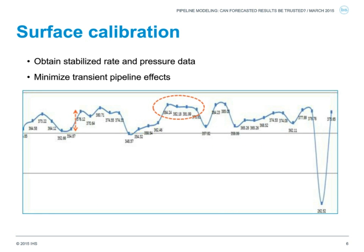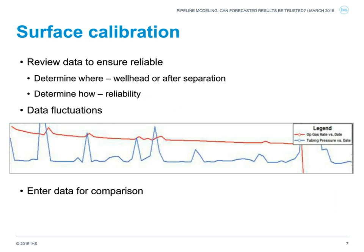Where should you always start from? You always need to understand the data you are going to use for calibration. It is very important to start with stabilized rates and pressure data. We want to minimize any transient pipeline effects within that data, because all our correlations are based on steady state conditions — meaning the rate coming in will match the rate coming out. Always try to find the most stable operating period possible. The graph here shows the gas rate through the main delivery point over time, allowing us to quickly pick a stable point.